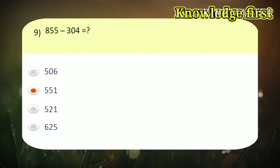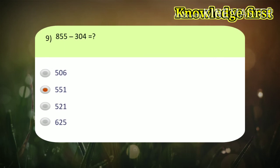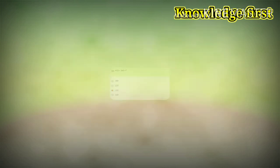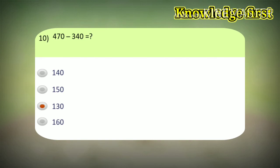Ninth example, 855 minus 304. Correct answer is 551. Tenth example, 470 minus 340. Correct answer is 130.